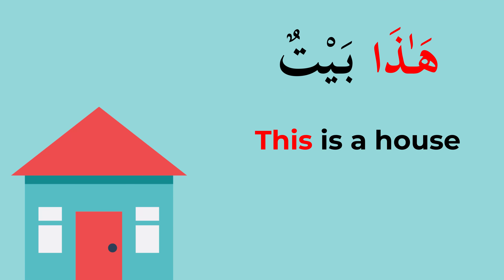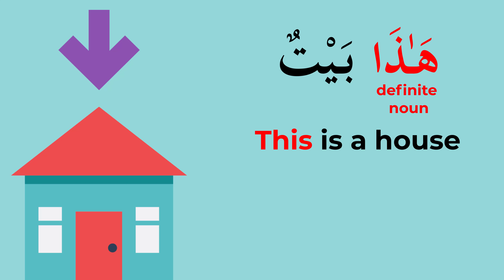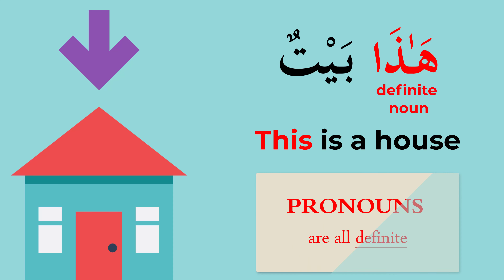Another example: Haaza baitun — 'This is a house.' Baitun is indefinite, and Haaza, while we won't go into detail now, is actually definite. When you point out to something particular, it is definite. We will explain this in more detail later.